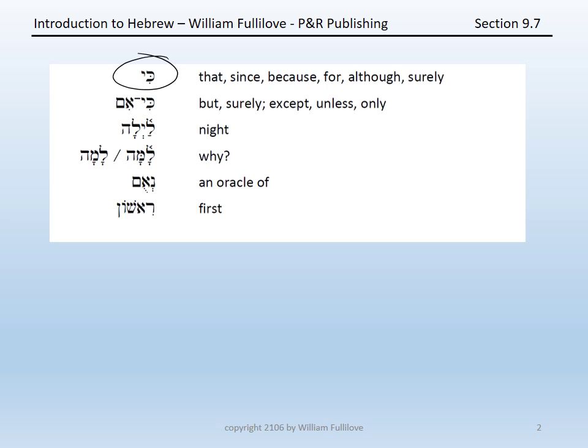Ki, a particle to which we will return later. For now just learn it with the glosses: that, because, for, although, surely. You can see with this range of glosses that we will want to later come back and nuance our understanding of the particle ki.